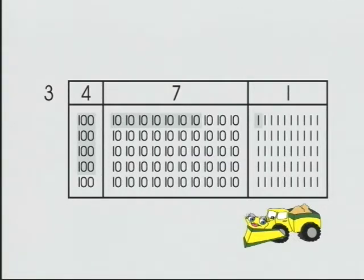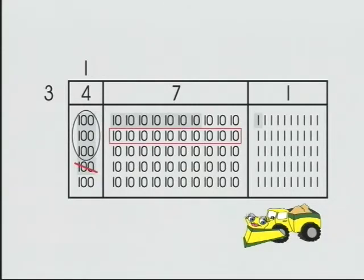In the hundreds column, we have one group of 3. Record. We have 100 left. We'll trade that 100 for 10 tens, giving us 17 tens.